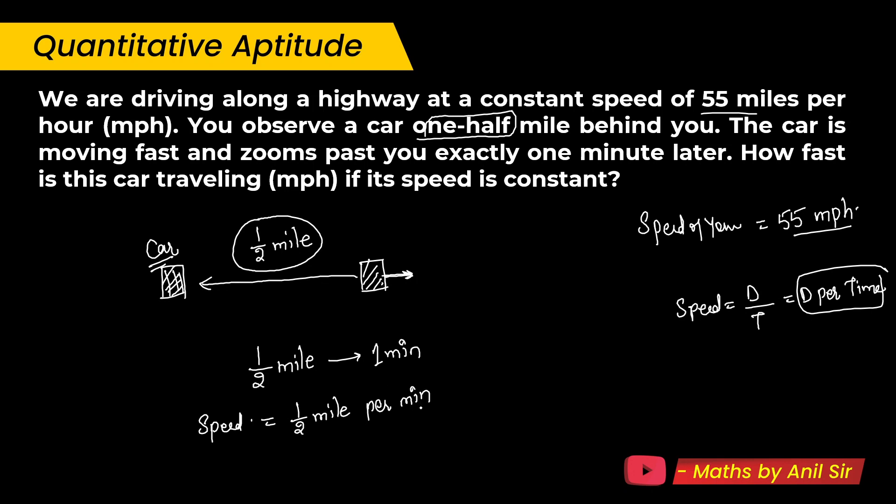So you can say in one hour, how much mile it will cover? So you can say one minute, if we multiply with 60, so it convert in one hour. So we can say the speed of that car which is 30 mile per hour.